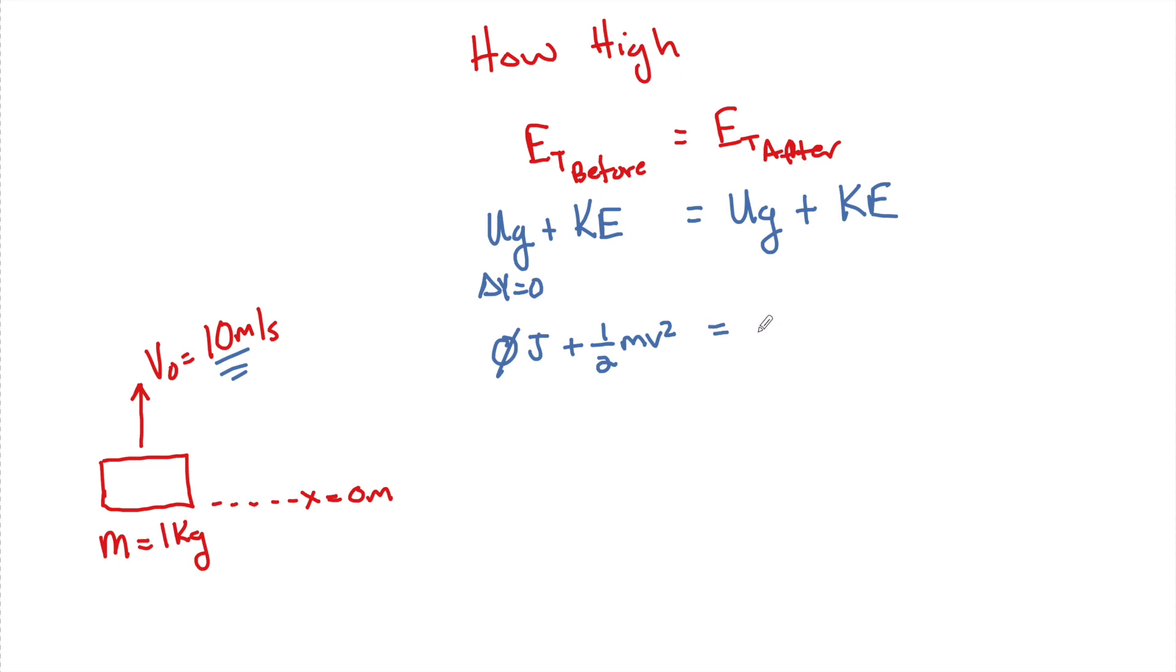Now when I look at the after, I know that it's going to travel up to some height that we don't know. That's what we want to solve for. How high? So I'm going to plug in M G delta Y. And I know this is the variable that I'm going to solve for. And from kinematics, we know that when it gets to this height, what is the speed at max height? Well, that's 0 meters per second. So that means that if V equals 0 meters per second, this whole term here is going to go to 0 joules as well.